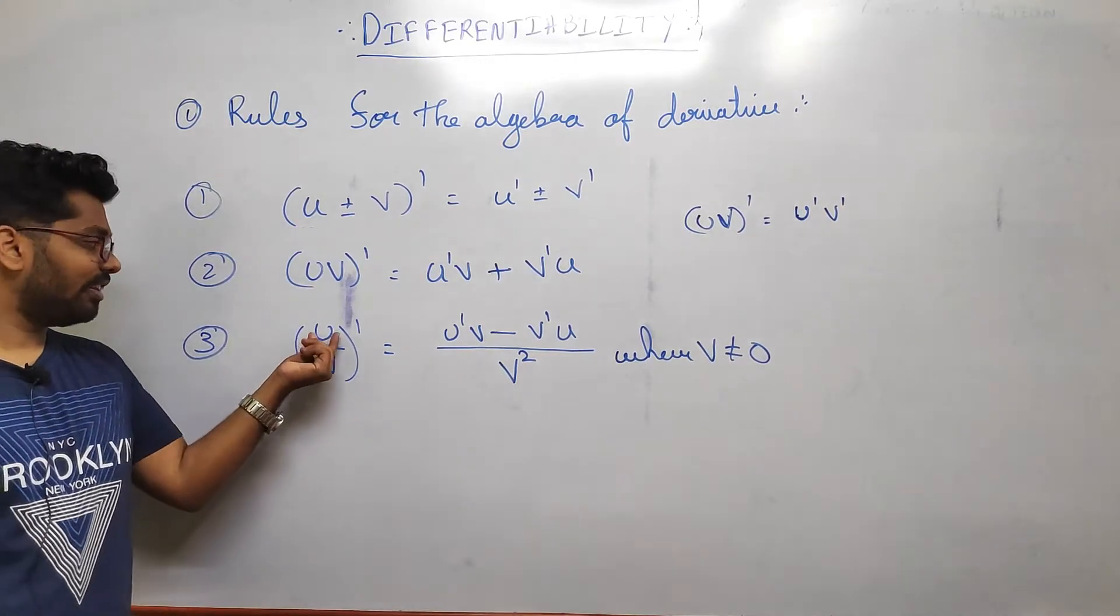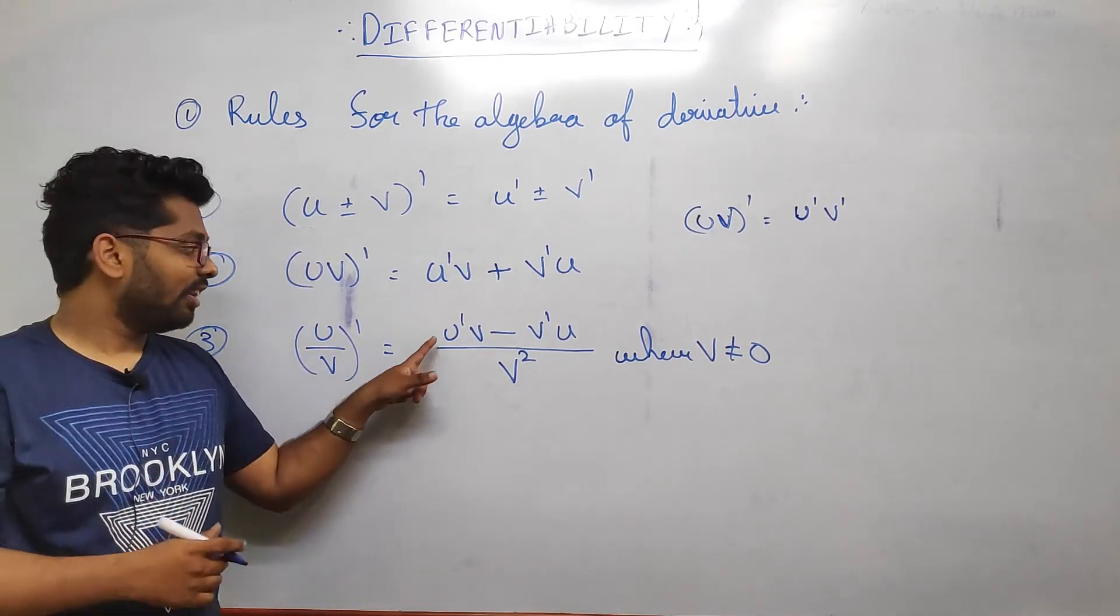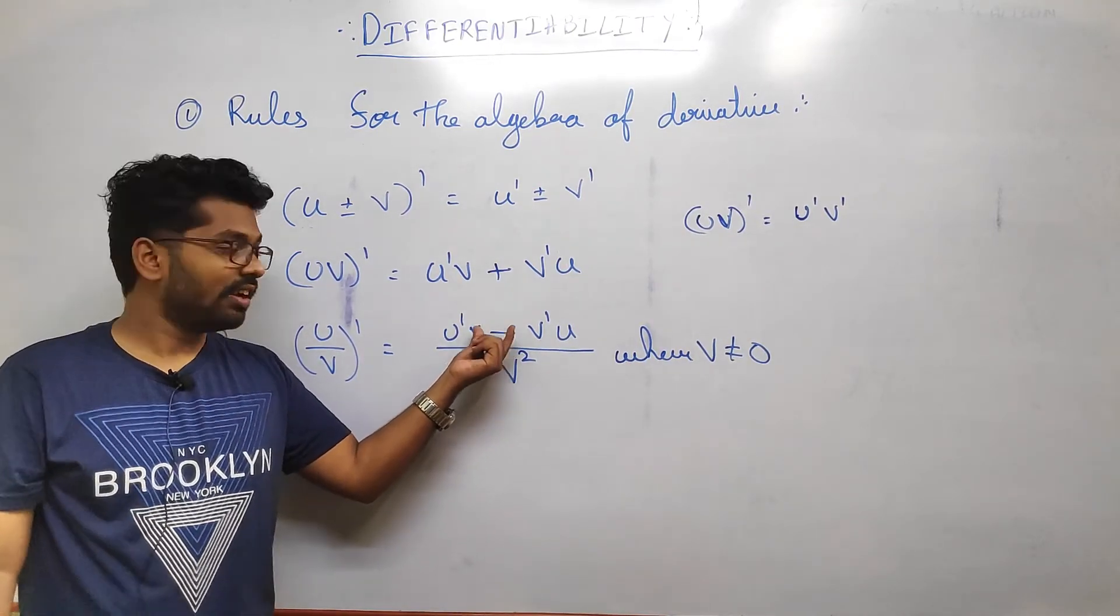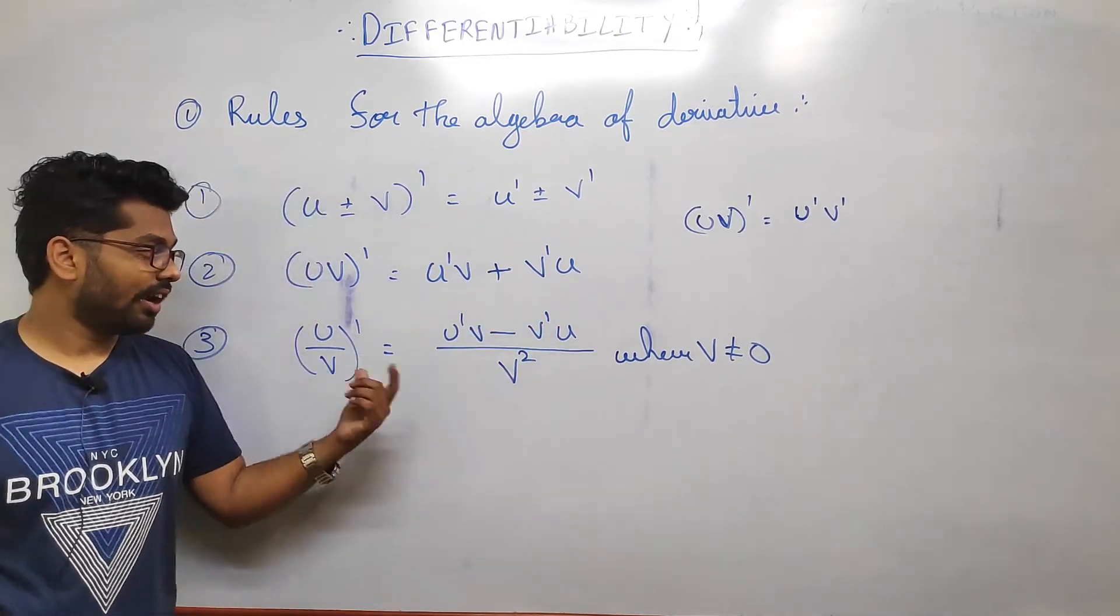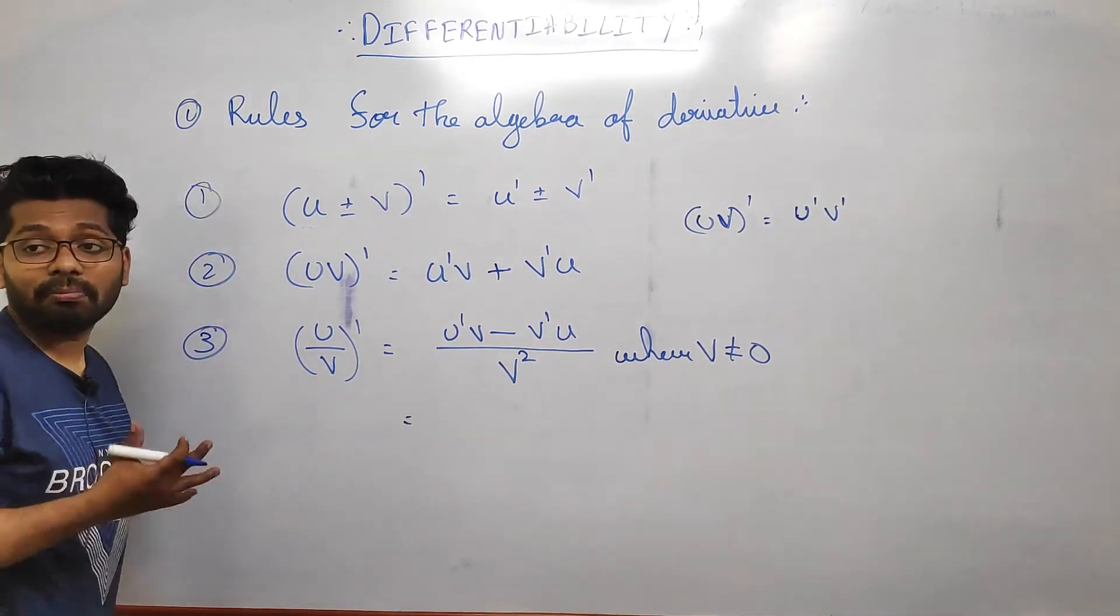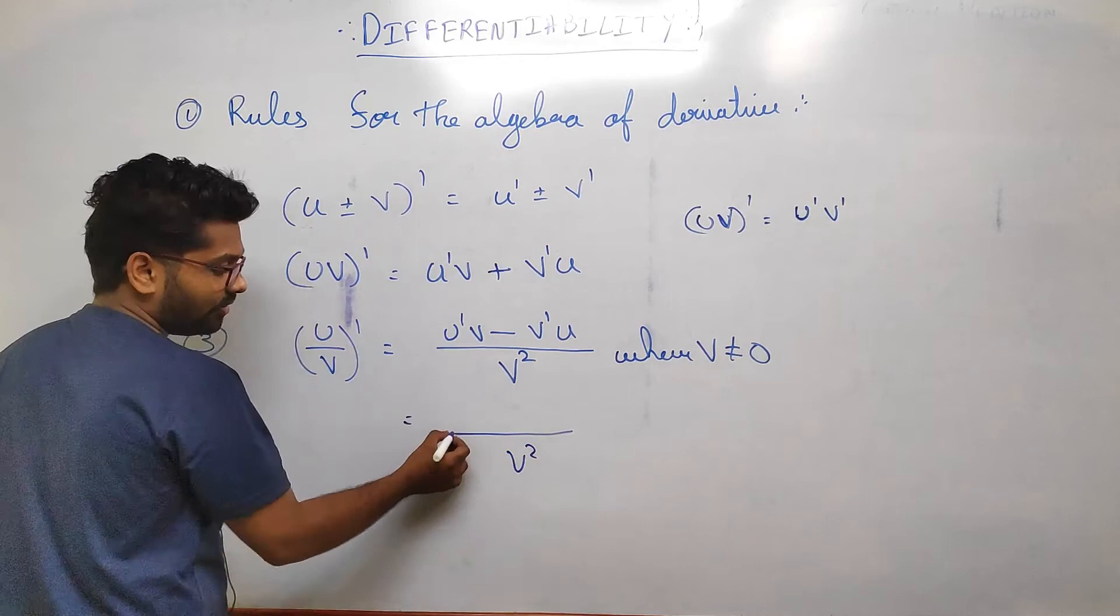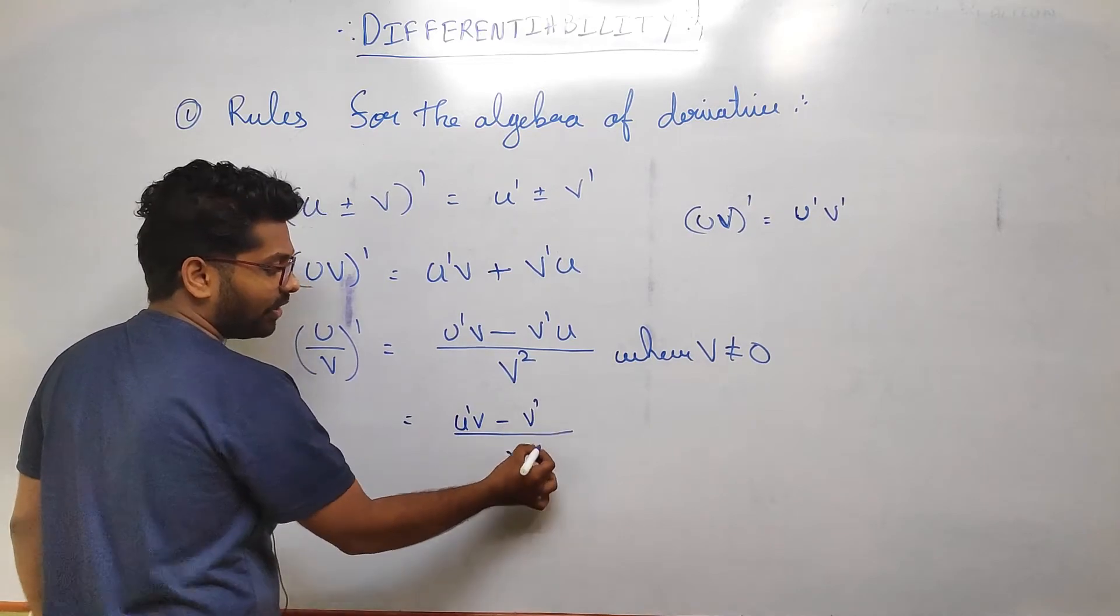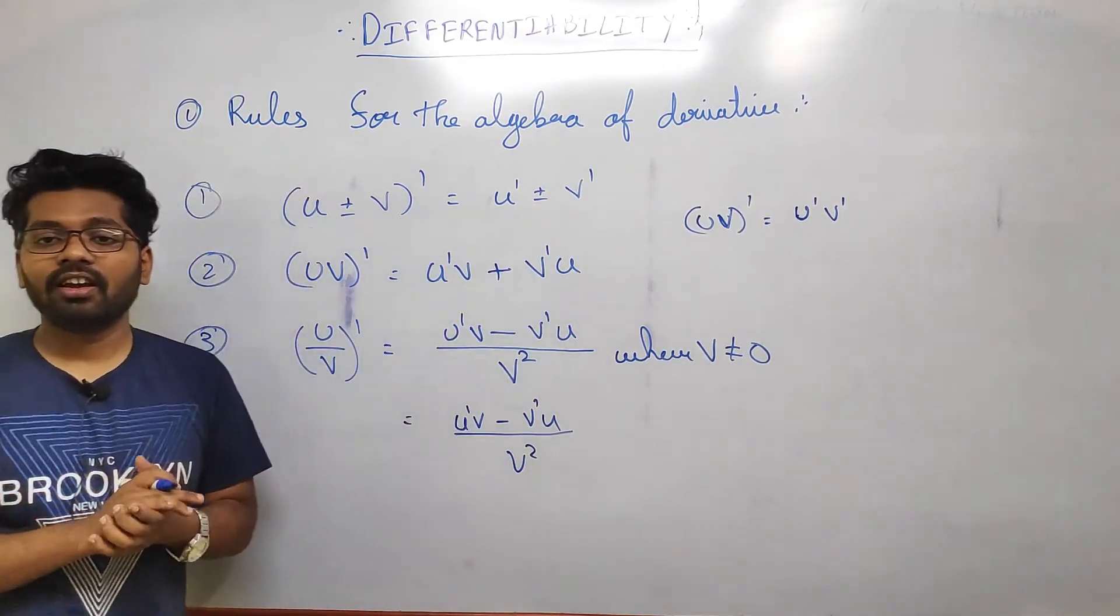The third one goes hand in hand - division rule. If you are taking differentiation of u/v, then u'v - v'u divided by v². That means first function's derivative, second function as it is, negative sign in between, then second function's derivative, first function as it is, and in the denominator v squared. We usually remember u/v derivative in sentence like: denominator square, first function derivative, second function as it is, minus second function derivative, first function as it is. So this is how we remember. You can remember in the form of sentences or you can remember the formula.